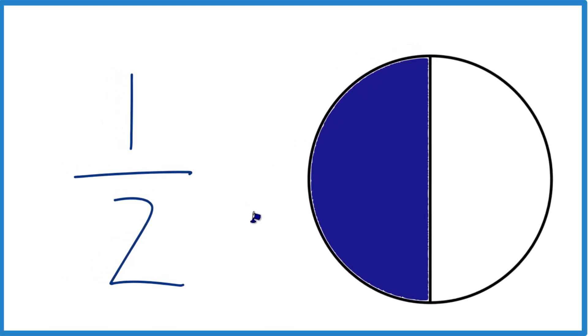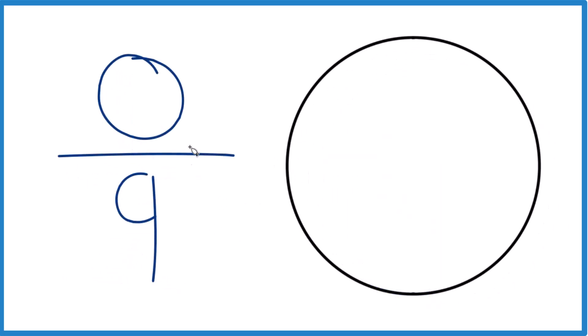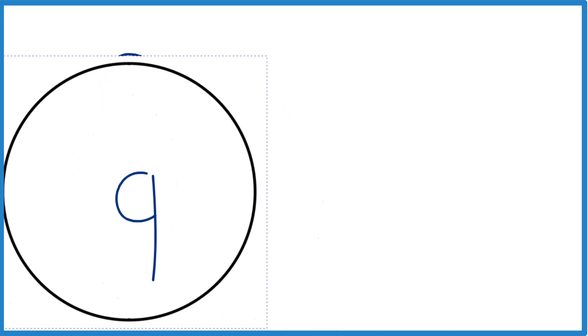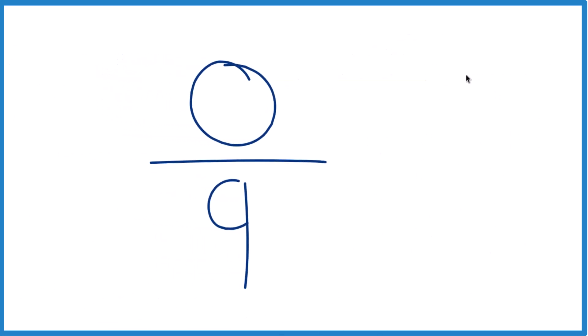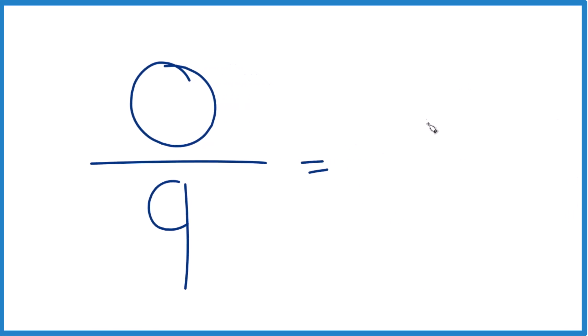But zero divided by nine, how do you do that? So what we're saying is we have zero, and we divide it into nine pieces. So zero, we don't have anything here. So if we divide basically nothing into nine pieces, it's still gonna be zero.